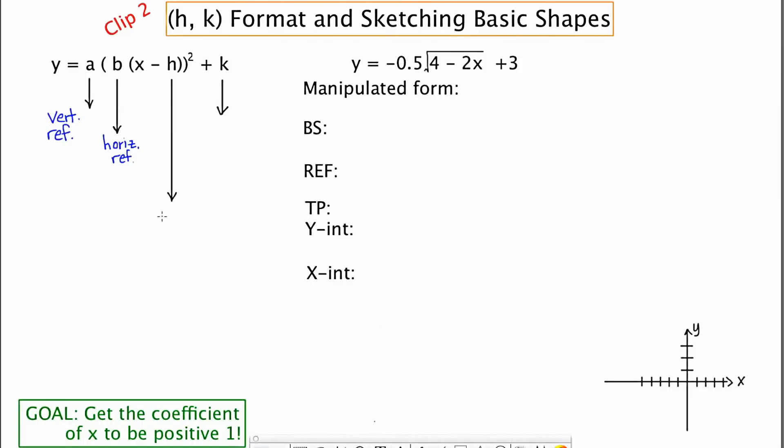H is basically a translation or a slide to the left or right. And K is going to be a slide up or down. Okay, so hopefully that brings back some memories from pre-calculus.